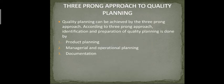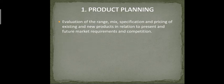Quality planning consists of three areas: first, product planning; second, managerial and operational planning; third, documentation. Product planning involves evaluation of the range, mix, specification, and pricing of existing and new products in relation to present and future market requirements and competition.